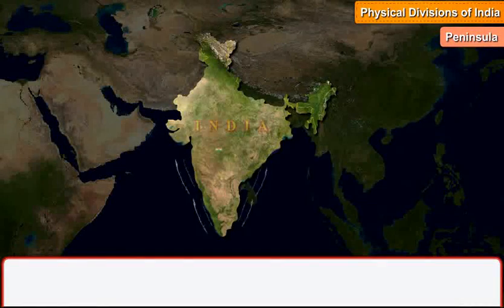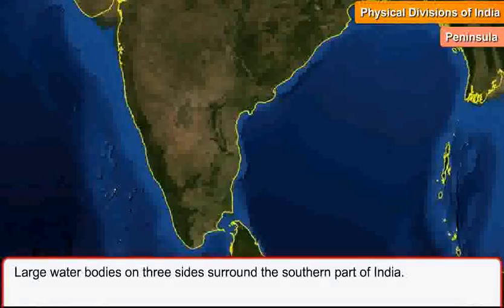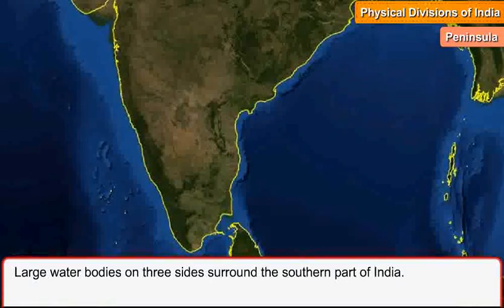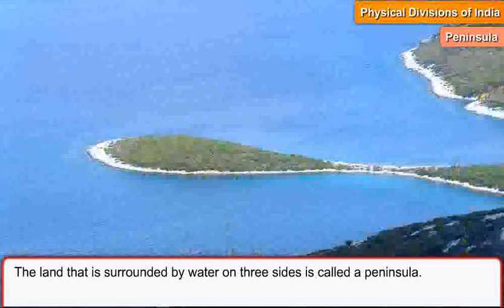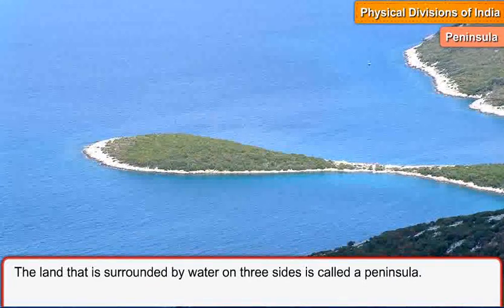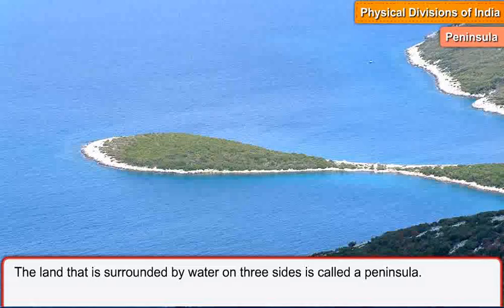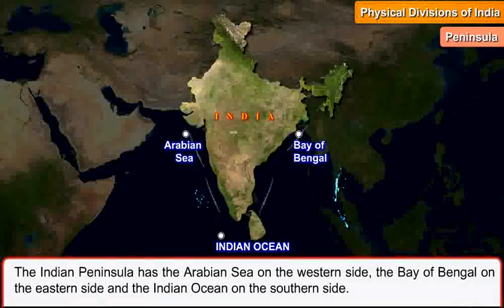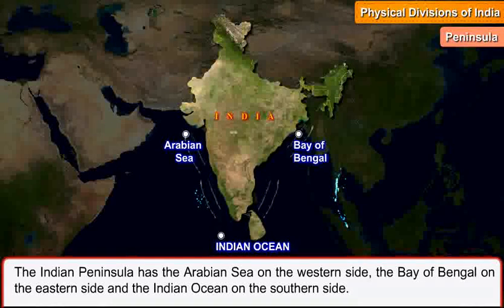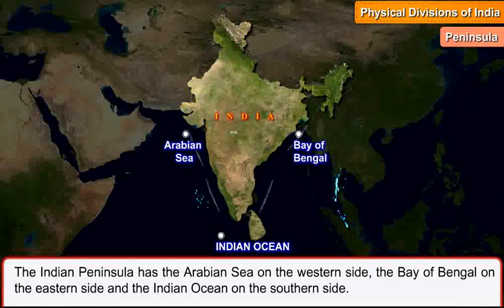Peninsula. Large water bodies on three sides surround the southern part of India. The land that is surrounded by water on three sides is called a peninsula. The Indian Peninsula has the Arabian Sea on the western side, the Bay of Bengal on the eastern side, and the Indian Ocean on the southern side.